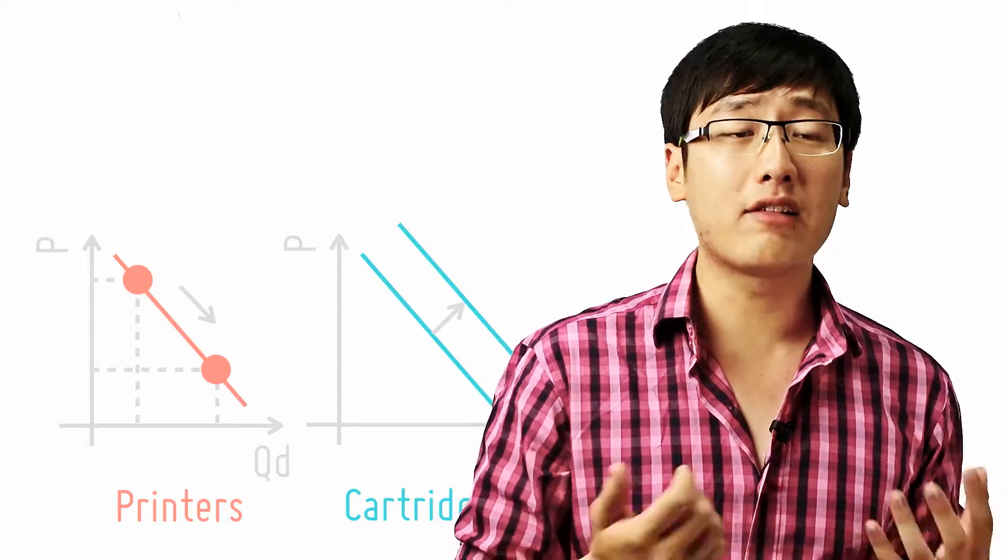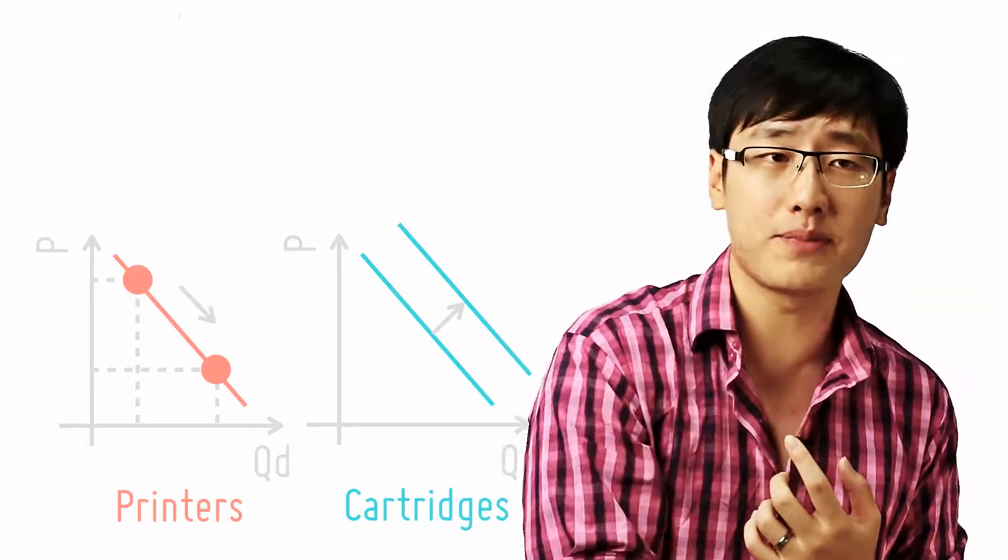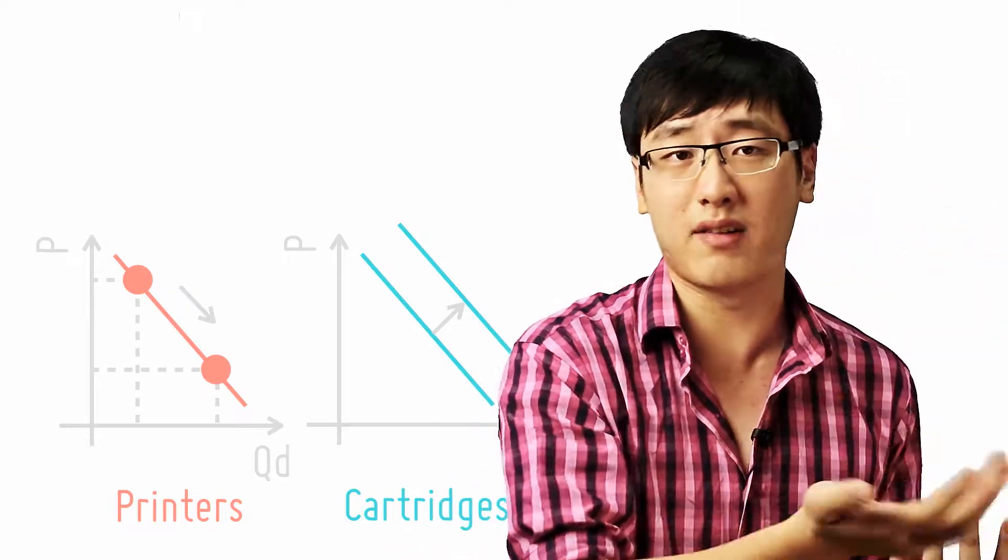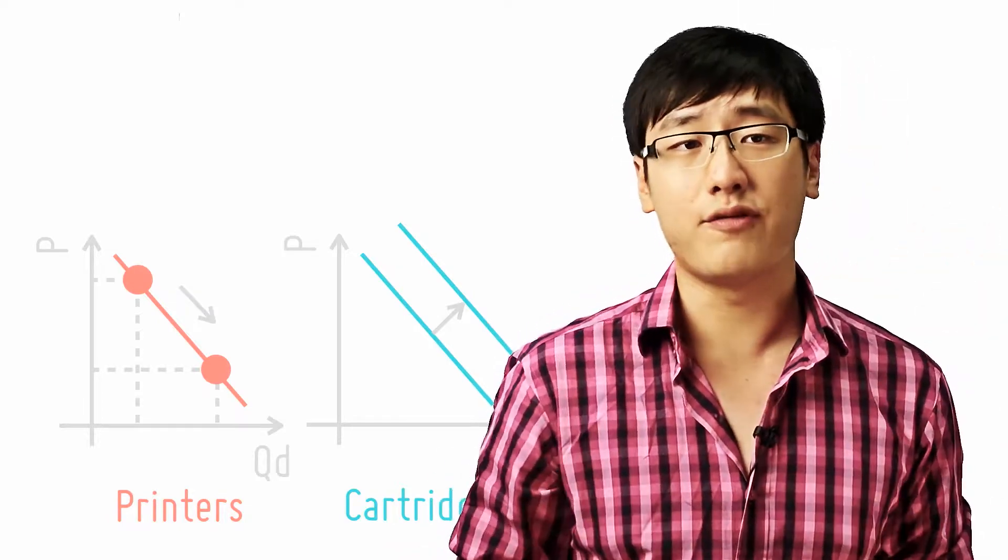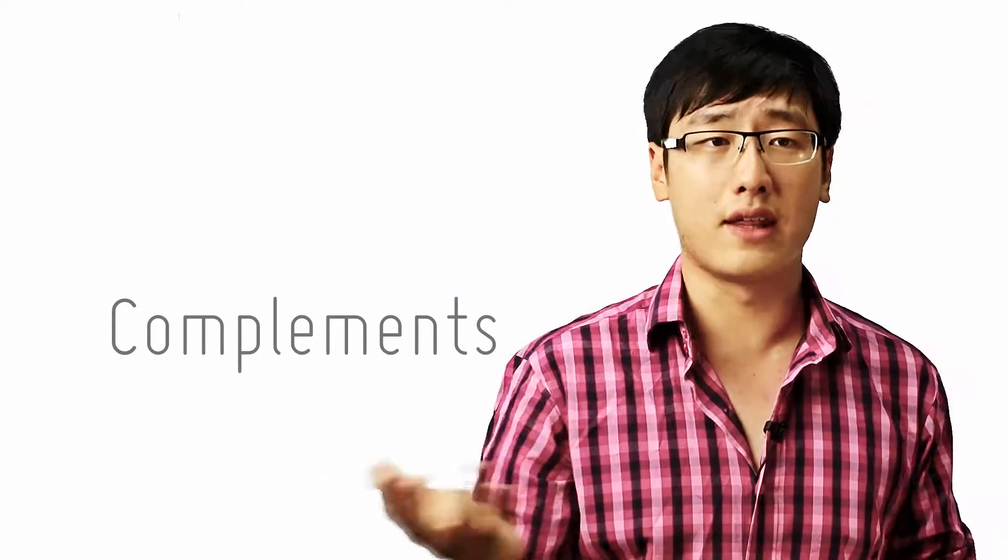So the demand of cartridges moves in the opposite direction as the price of Printer drops. The quantity demand of Printers increase, and the demand for cartridges increase. And they are called complements because you buy them both together. They complement each other.